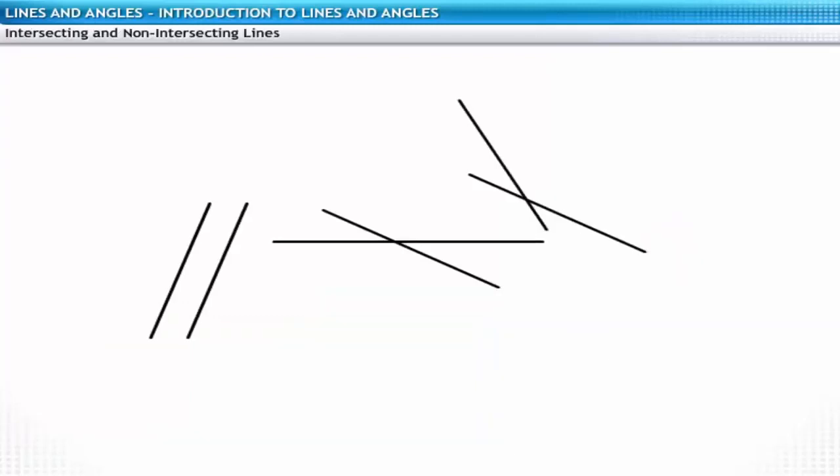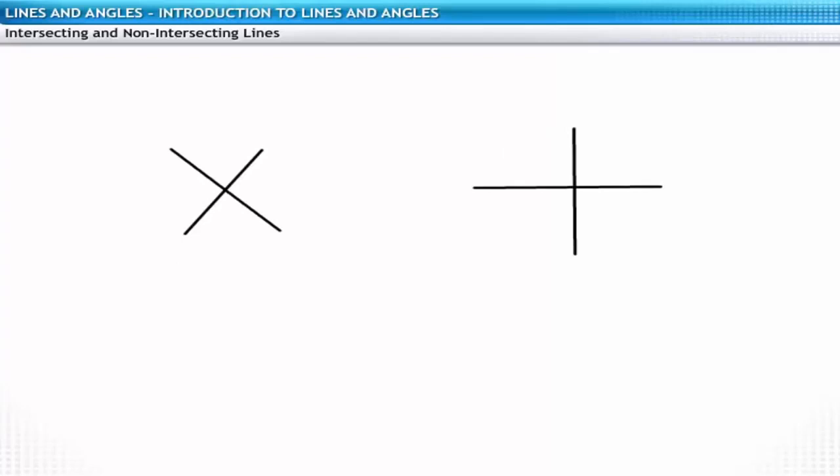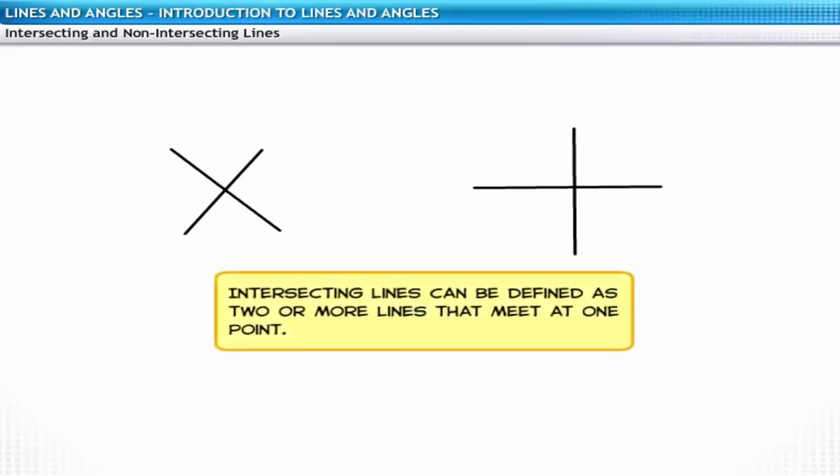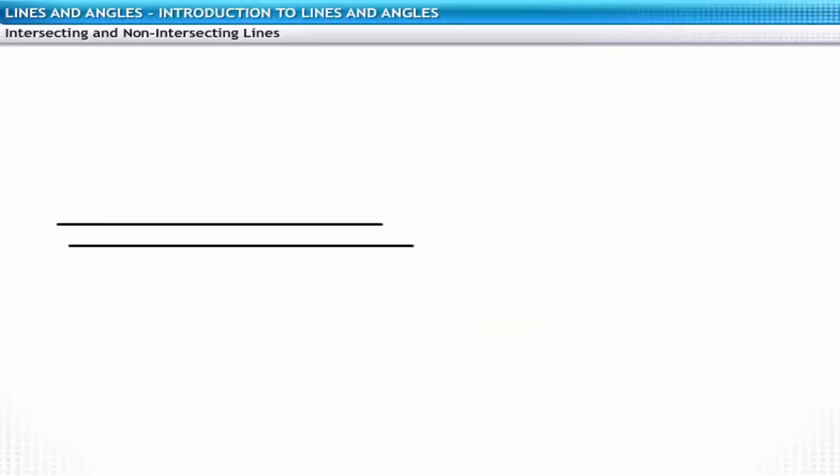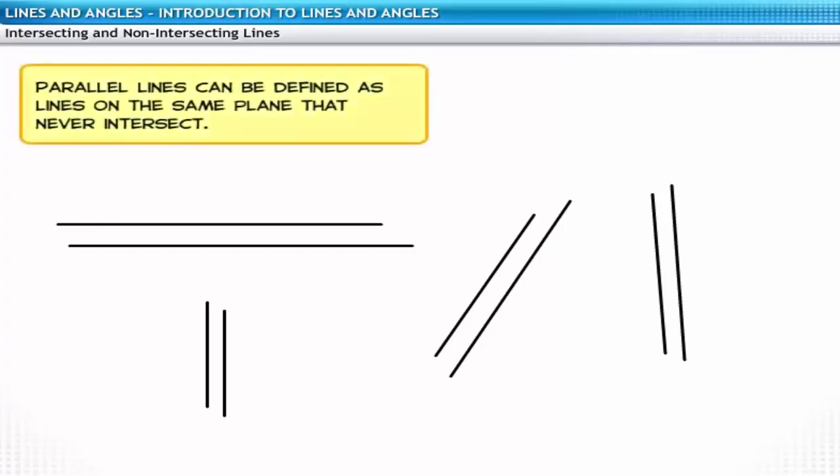Look at these lines. You can see some lines passing through each other while others are not. Let's look at these set of lines. They are crossing one another at a single point. Such lines are called intersecting lines. Intersecting lines can be defined as two or more lines that meet at one point. Now, let's look at another set of lines. They neither meet nor cross at any point. Such lines are called parallel lines. Parallel lines can be defined as lines on the same plane that never intersect.